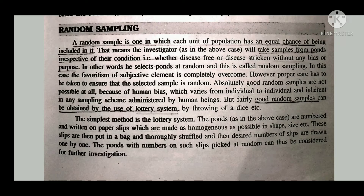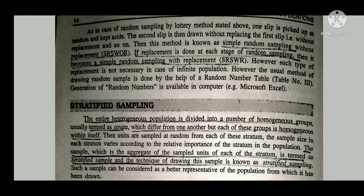In stratified sampling, the entire heterogeneous population is divided into a number of homogeneous groups, usually termed as strata, which differ from one another but each group is homogeneous within itself. Units are then sampled at random from each stratum. The sample size in each stratum varies according to the relative importance of that stratum in the population.